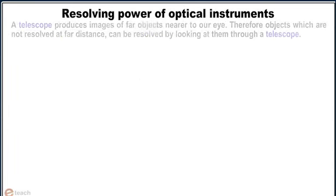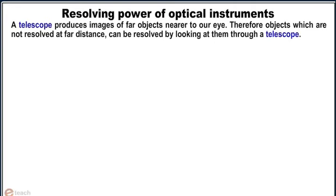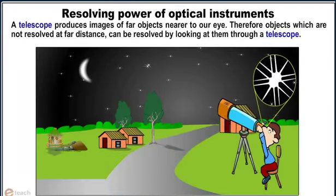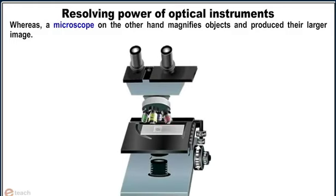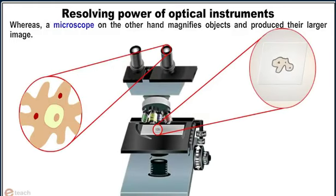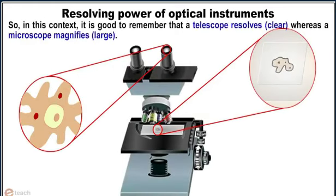A telescope produces images of far objects nearer to our eye, therefore objects which are not resolved at far distance can be resolved by looking at them through the telescope. Whereas a microscope magnifies objects and produces their larger image. So in this context, it is good to remember that a telescope resolves clearly whereas a microscope magnifies largely.